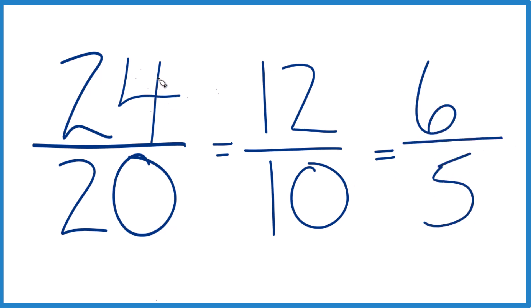So when we simplify 24 twentieths, we get 12 tenths, which we can simplify again to 6 fifths. So there's our reduced or simplified number.